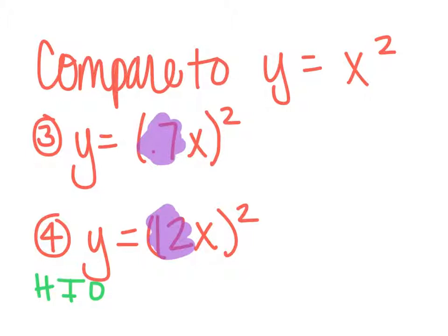So 0.7 is less than 1, which means it's the opposite of what we think it should be. So instead of compressing it, this is going to be a horizontal stretch.